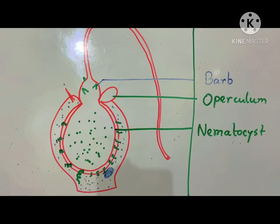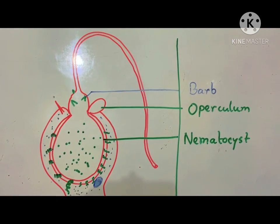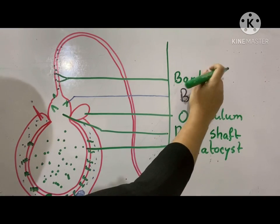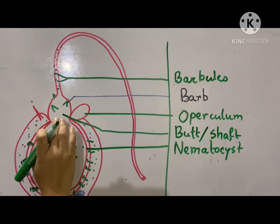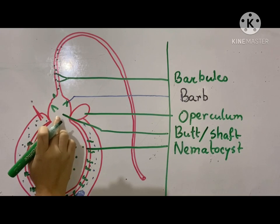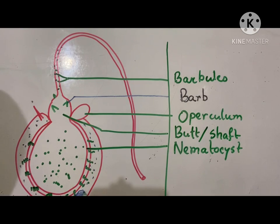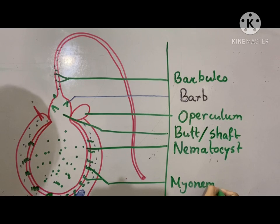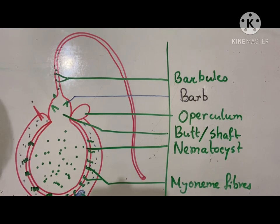There are three bars. Then you can see the small barb-like structures which are called barbules or tiny spikes. The whole barbs and barbules are taken by the butt or shaft. In the cytoplasmic portion, this is the cytoplasm. These are the muscular structures called myonim fibers or muscle fibers. And this one is the nucleus. This portion is called the lasso.